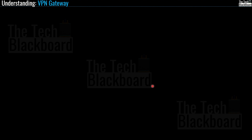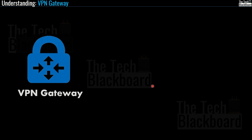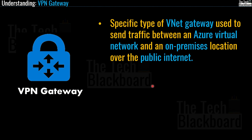Now that you understand Azure virtual network pairing and the two types Azure supports, let's talk about the second topic: VPN Gateway. A VPN gateway is a specific type of virtual network gateway used to send traffic between an Azure virtual network and an on-premises location over the public internet. The key keywords here are: virtual network gateway, Azure virtual network, on-premises, and public internet.